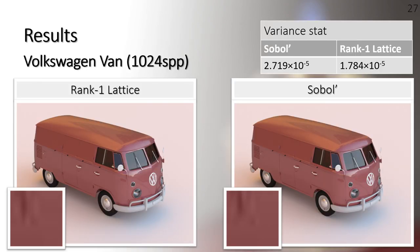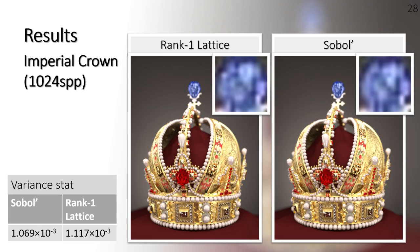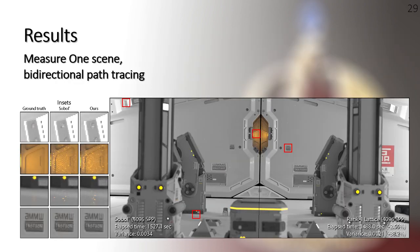Here, we briefly demonstrate the render result of the rank 1 lattice in path tracing and bidirectional path tracing. We used the PBRT renderer in this experiment. In path tracing, the rank 1 lattice exceeded the performance of Sobol sampler in Volkswagen and Spaceship scenes. In the Emperor Cloud scene, the two sequences achieve similar performance.